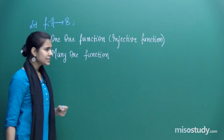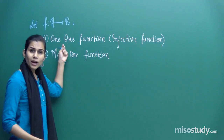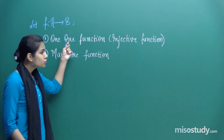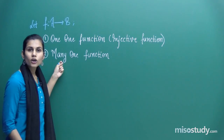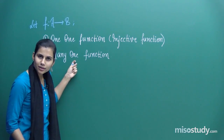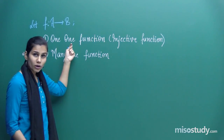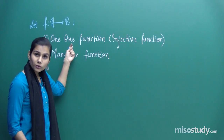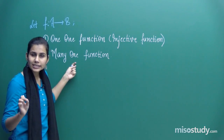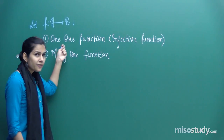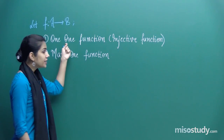As the name suggests, many-one is the opposite of one-one. In one-one, distinct members went to distinct members. In many-one, many members go to the same one member. Functions which are many-one are definitely not one-one, and functions which are one-one are definitely not many-one. Any function you pick up will be either one-one or many-one — it has to be one of these two.